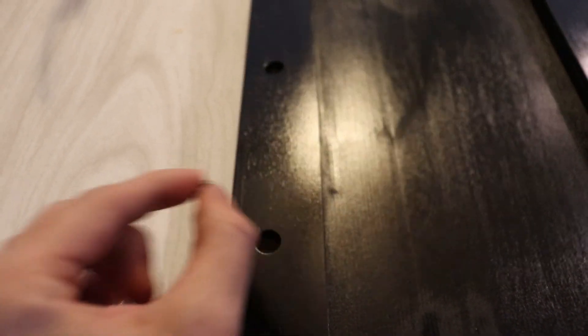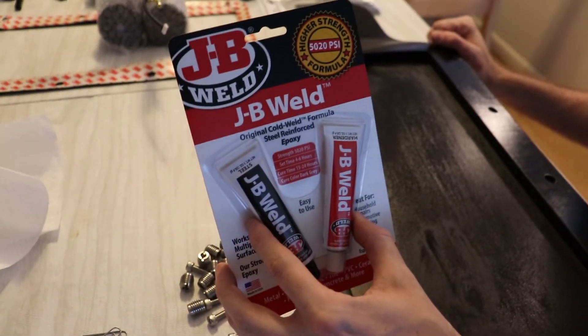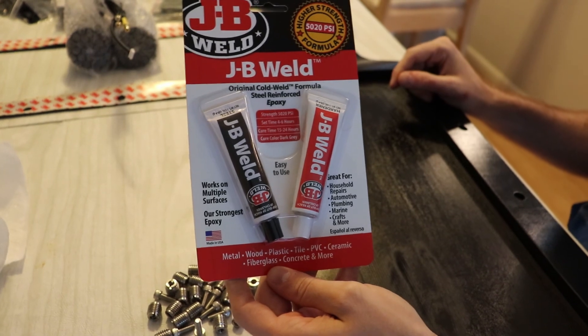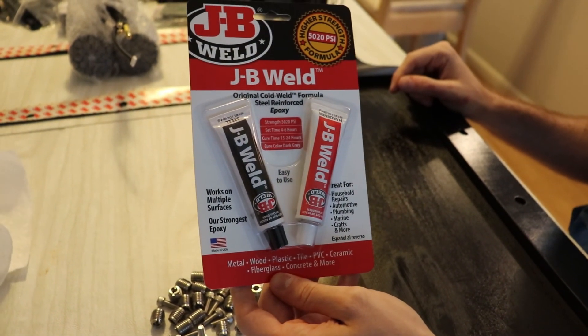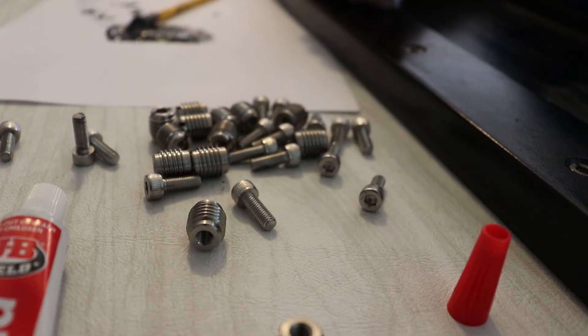I recommend using a high-quality epoxy resin such as JB Weld. This has a greater than 5,000 PSI strength rating once it is fully set.